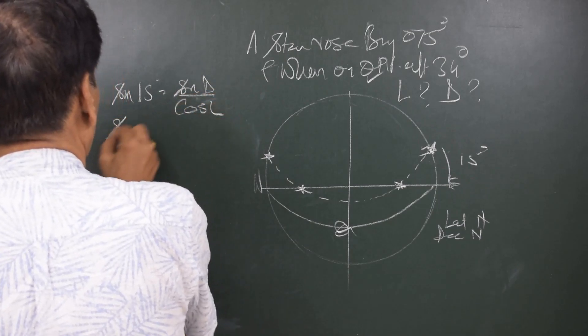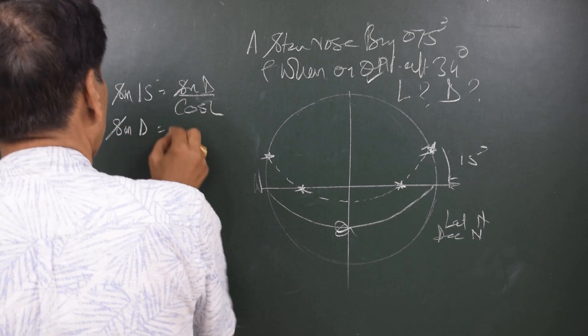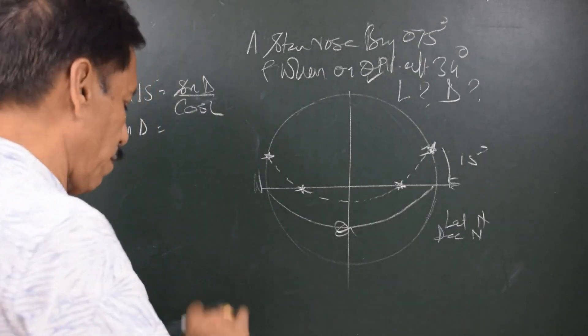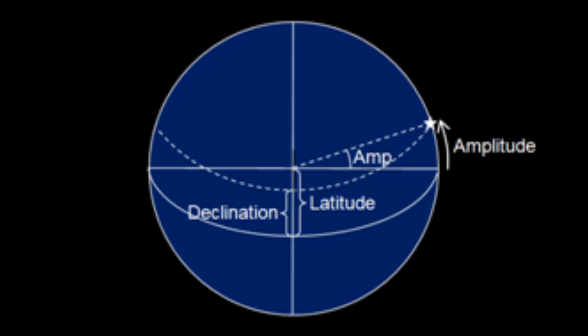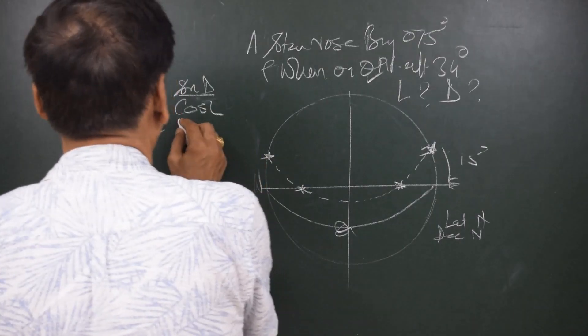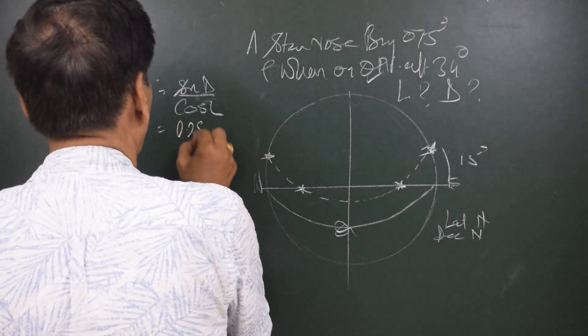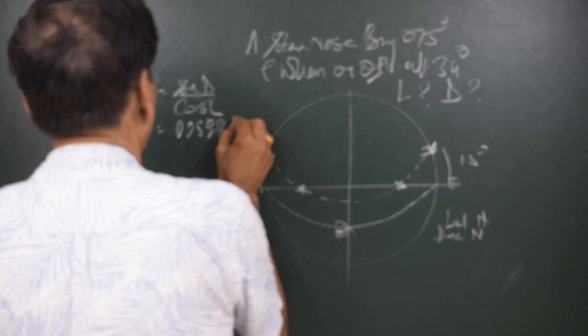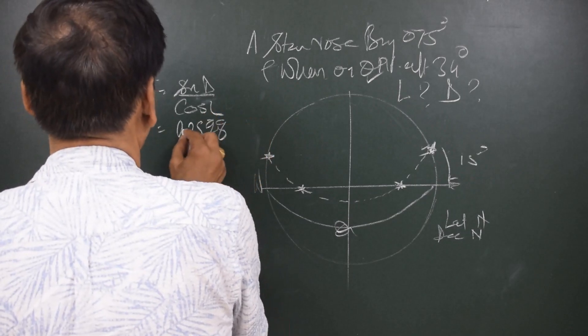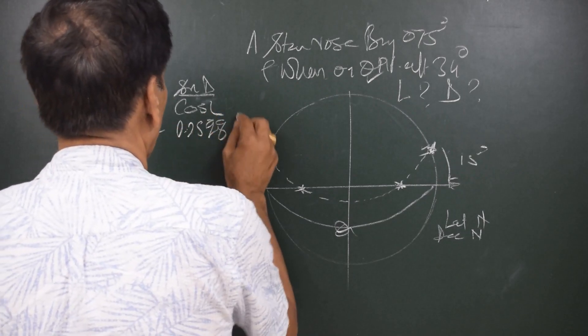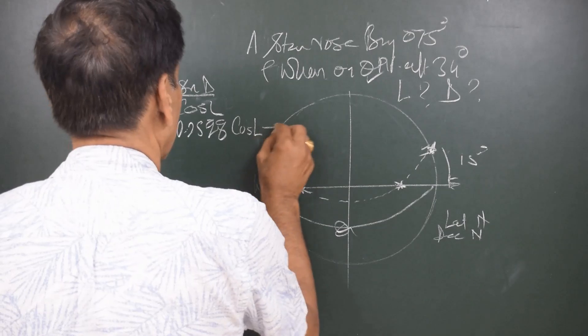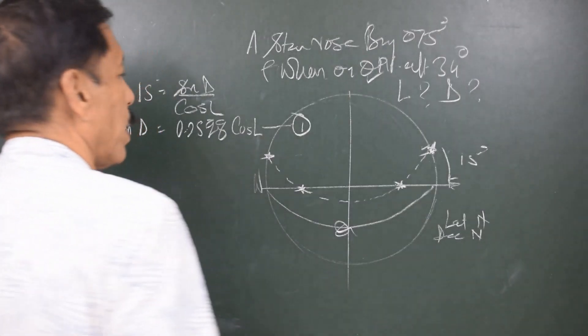So, sin of amplitude is equal to sin of D upon cos L. So, we have a formula like sin of D is equal to, let us see how much is sin 15, 0.2588, that is the sin 15 into cos L. So, this is your equation number 1.